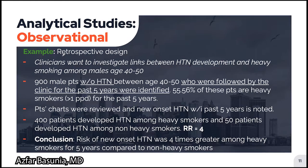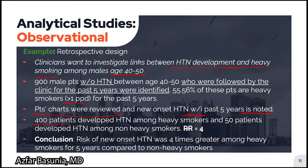Here's an example of a retrospective cohort study with the same clinical question. 900 male patients without hypertension aged 40 to 50, who were followed by the clinic for the past five years, were first identified. 55.56% were heavy smokers for the past five years. Charts were reviewed and new-onset hypertension within the past five years was noted. 400 patients had hypertension among heavy smokers and 50 among non-heavy smokers. The risk ratio was again calculated to be 4 and the same conclusion was reached. Note that patients were retrospectively followed by reviewing their charts.